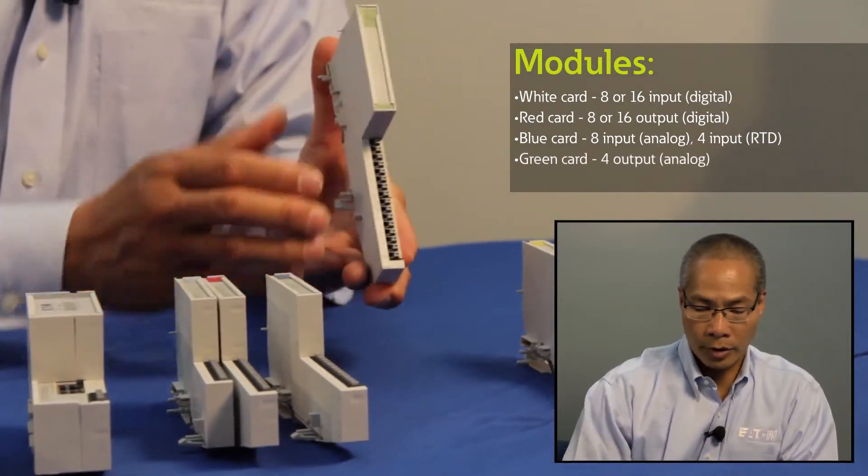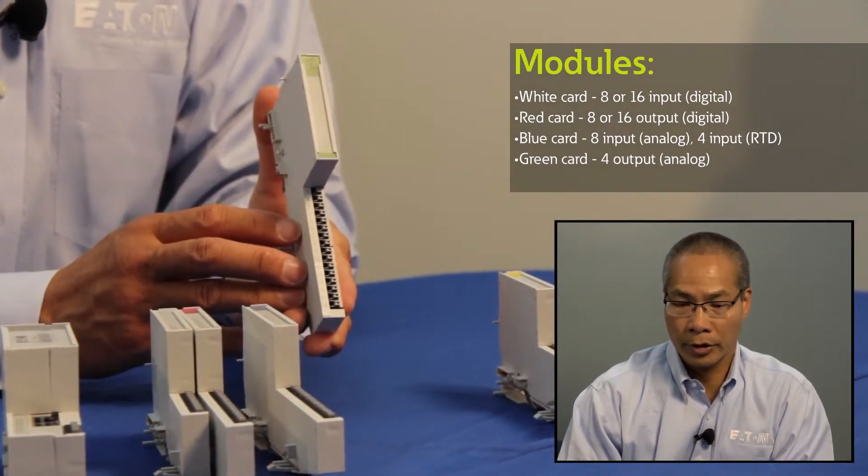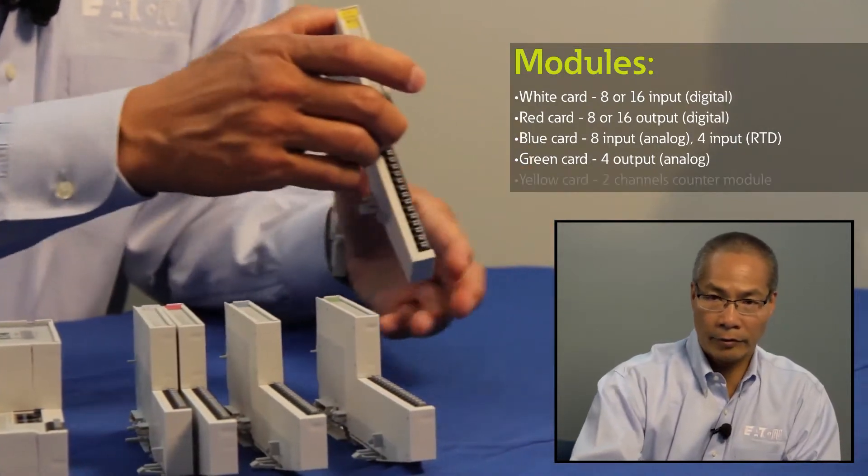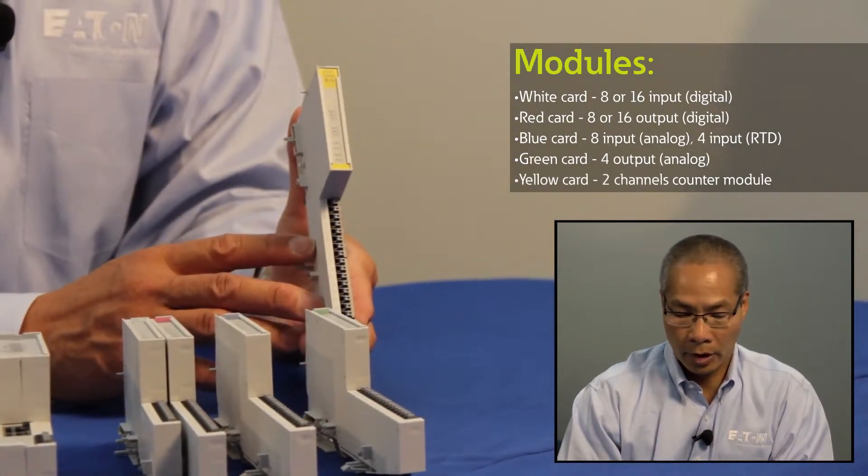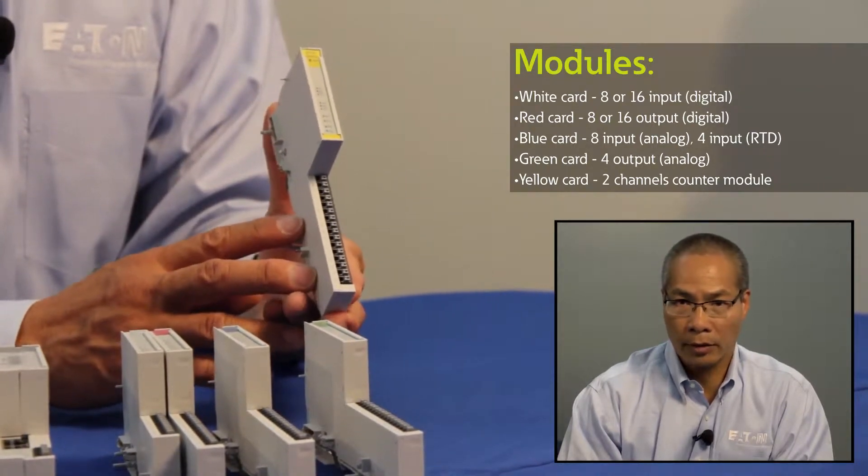The green module is my 4 channel analog output card for voltage and current. And then finally I have a yellow color-coded card here which is for a 32-bit 2 channel counter module.